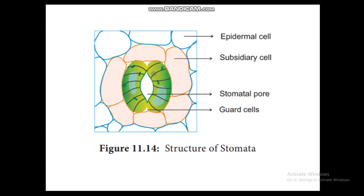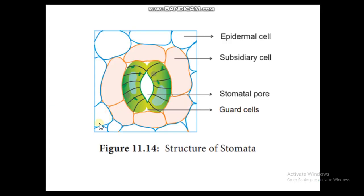Stomata act like the nose of a plant. In humans we take in oxygen and release carbon dioxide through the nose; similarly, plants do not have a nose so they use stomata for the exchange of gases — taking in carbon dioxide and releasing oxygen. Each stomatal pore is surrounded by two cells called guard cells.